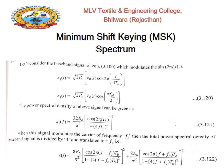When this signal modulates a carrier of frequency fc, the total power spectral density of the baseband signal is divided by 4 and translated to ±fc, giving S(f) = (8Eb / π²) · [cos(2π(f - fc)·Tb) / (1 - (4(f - fc)·Tb)²)]². In equation 3.122, the first component is related to the lower frequency component (f - fc) and the second part is related to the higher frequency component (f + fc).